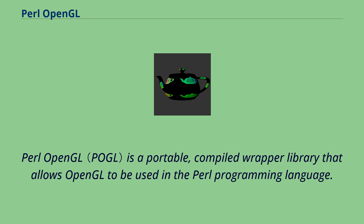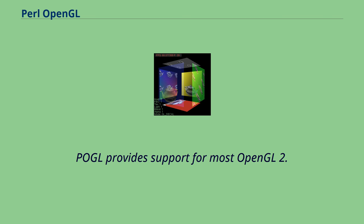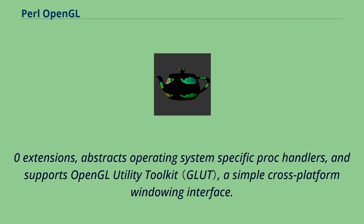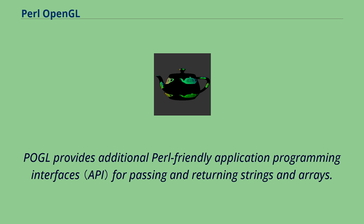Perl OpenGL is a portable, compiled wrapper library that allows OpenGL to be used in the Perl programming language. Pugl provides support for most OpenGL too, with zero extensions, abstracts operating system-specific proc handlers, and supports OpenGL Utility Toolkit, a simple cross-platform windowing interface. Pugl provides additional Perl-friendly application programming interfaces for passing and returning strings and arrays.